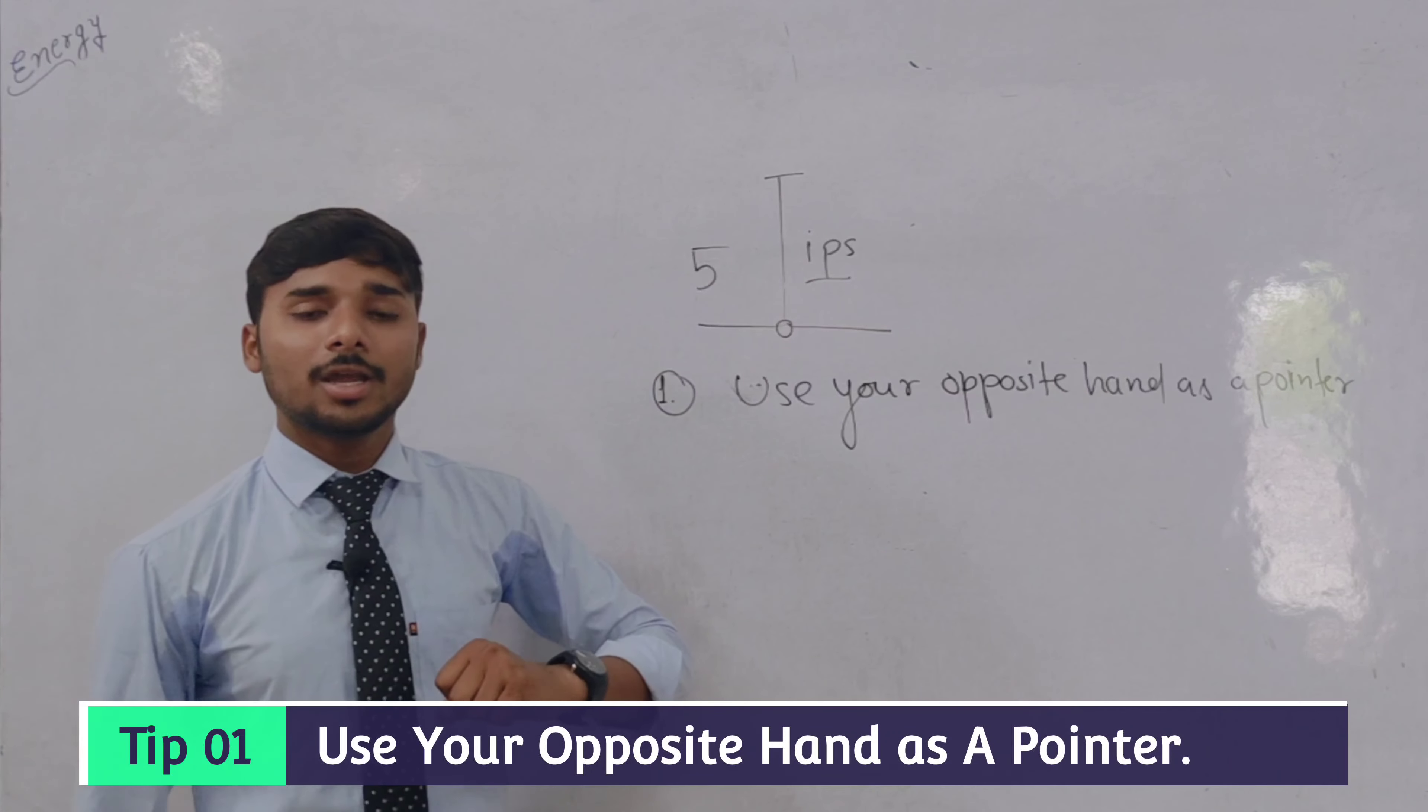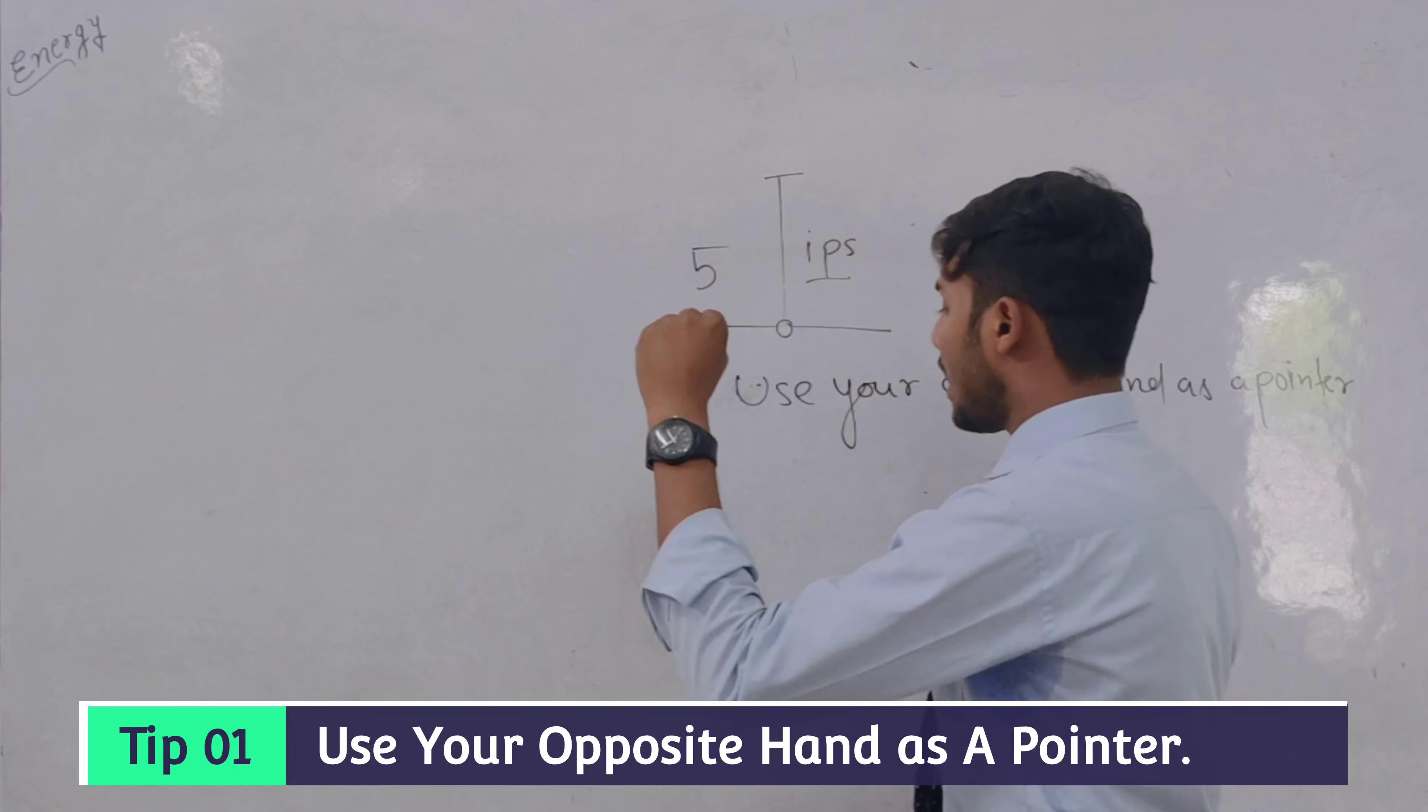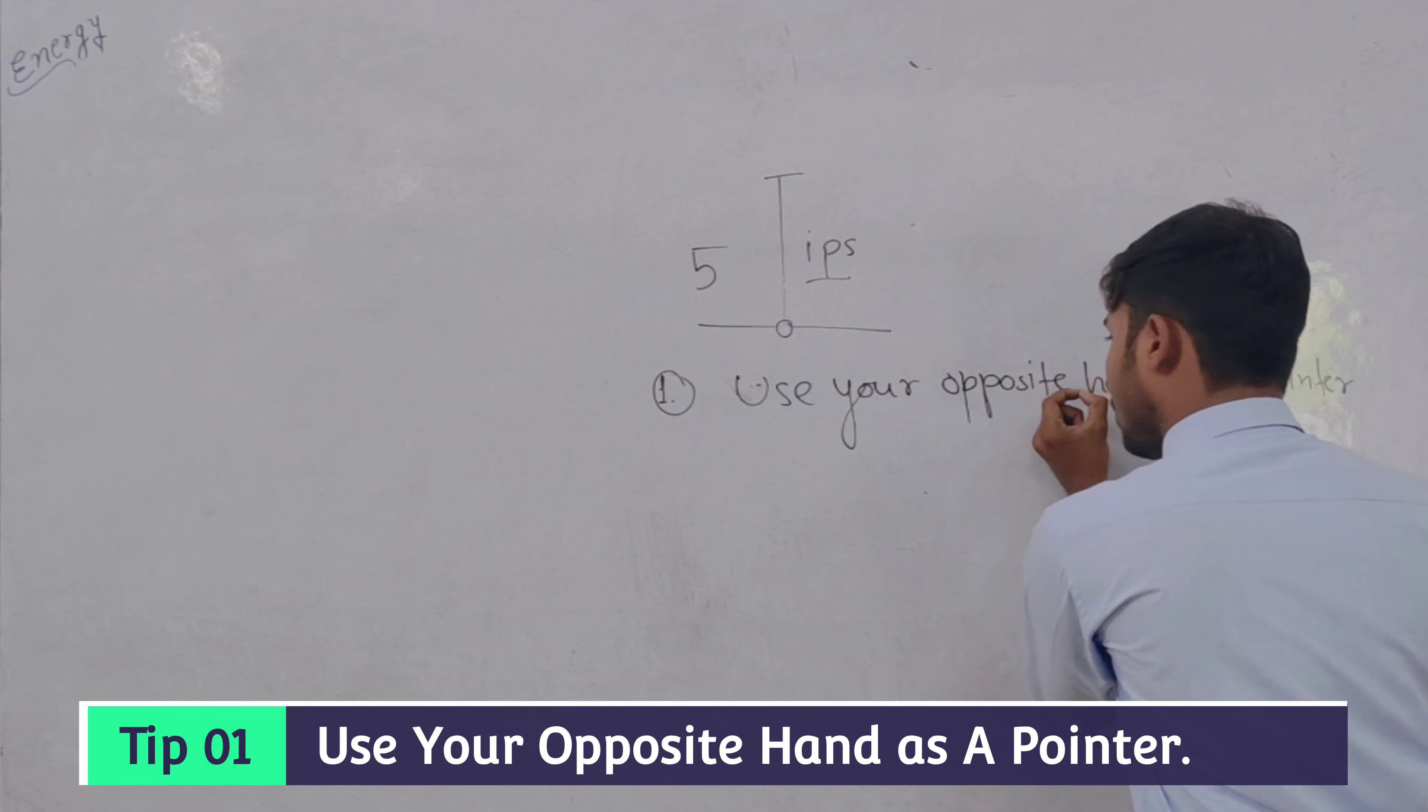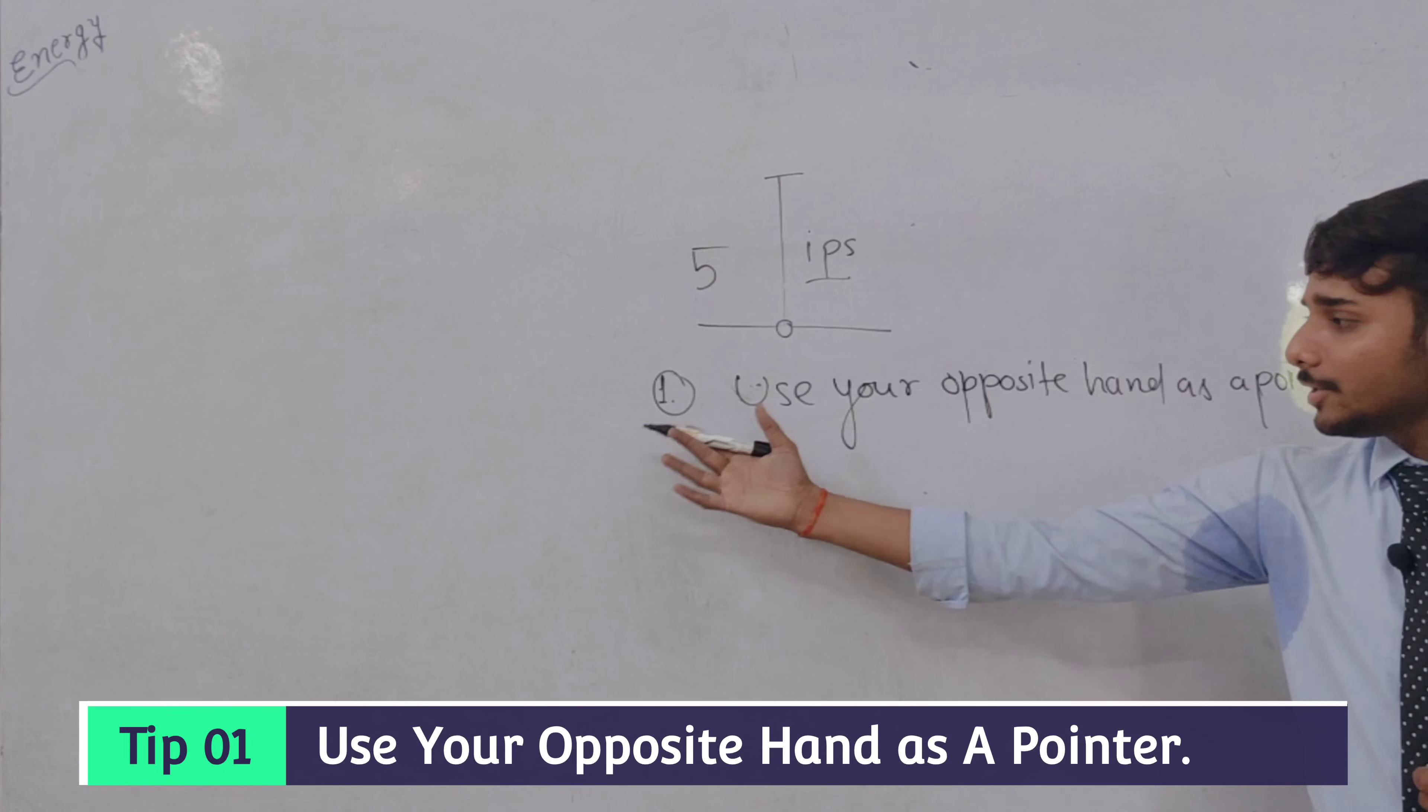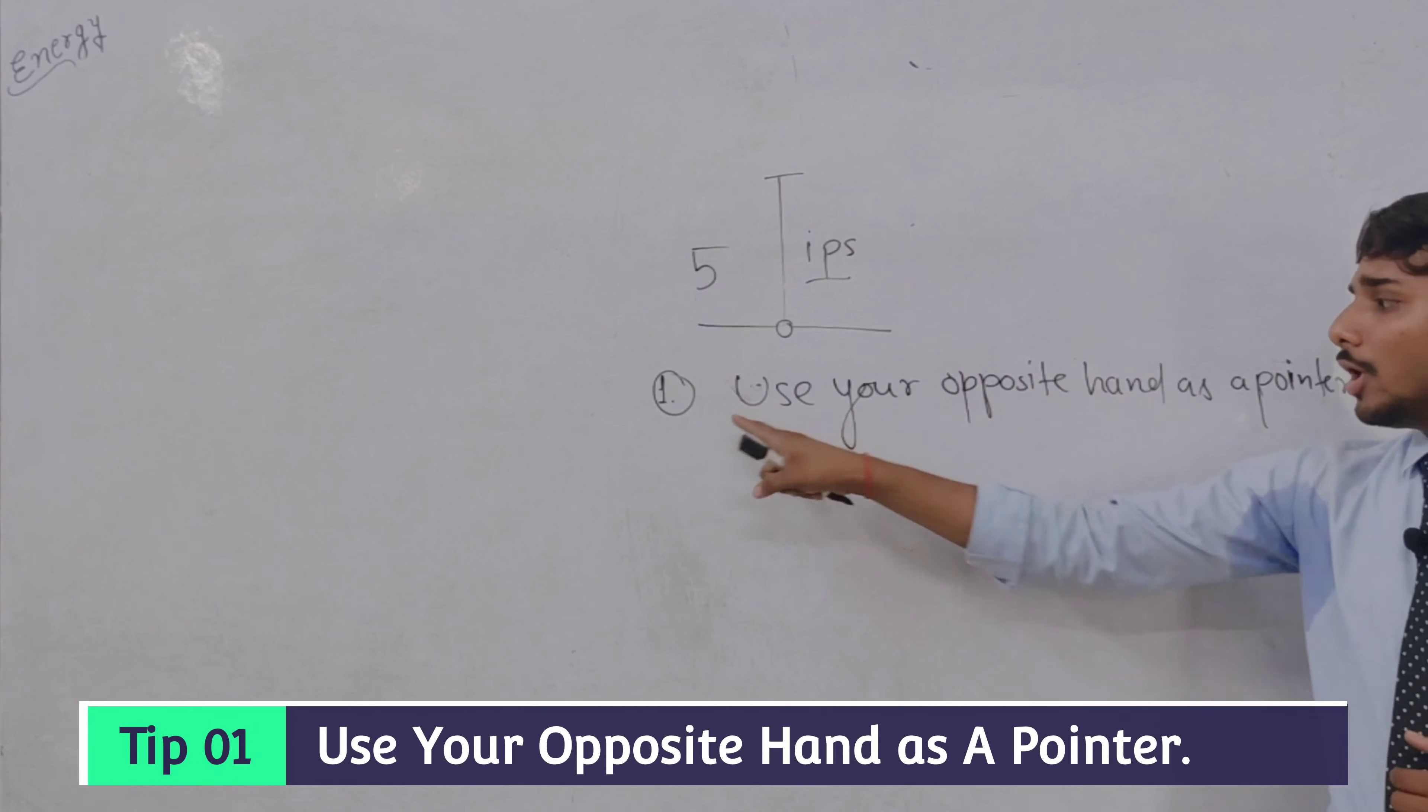Let me tell you another thing. If you have written it from this hand, your left hand, then what do you have to do? You have to write it like this, and your right hand will be a pointer. So you will use your right hand as a pointer. So use your opposite hand as a pointer.